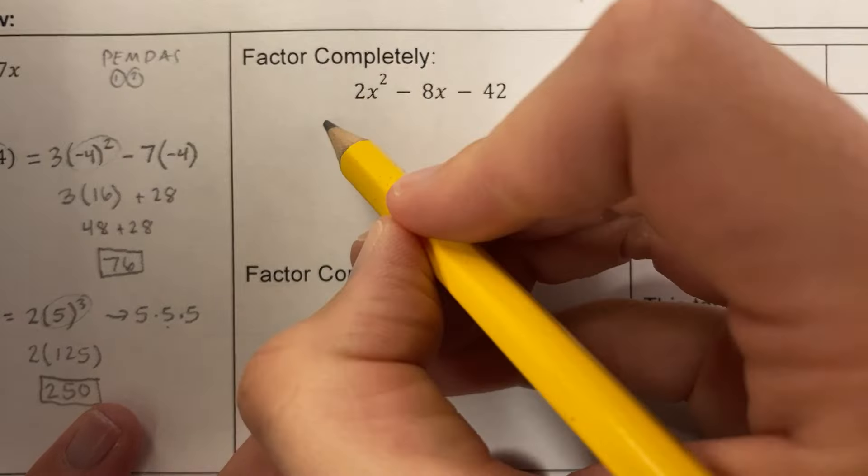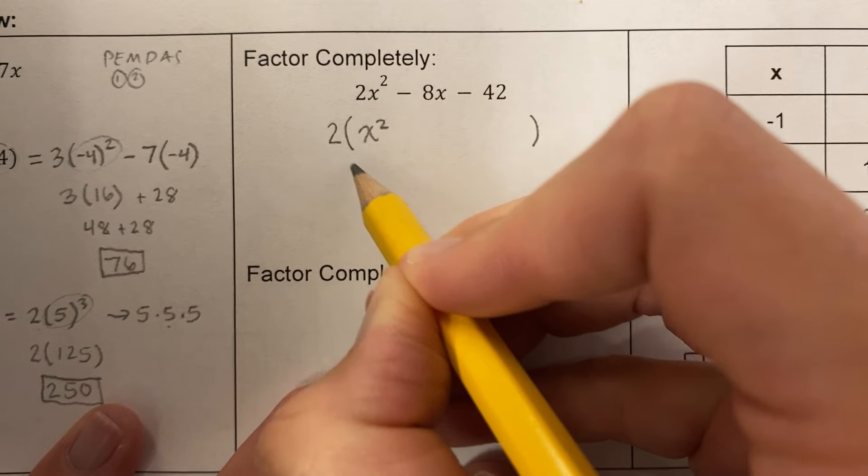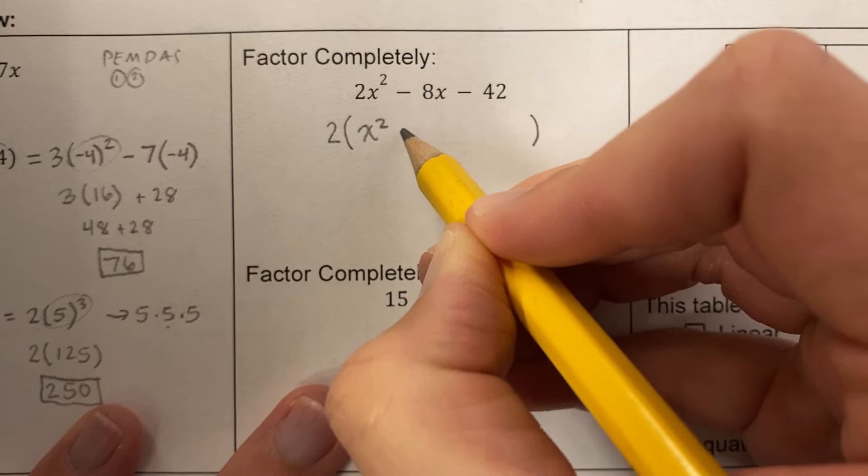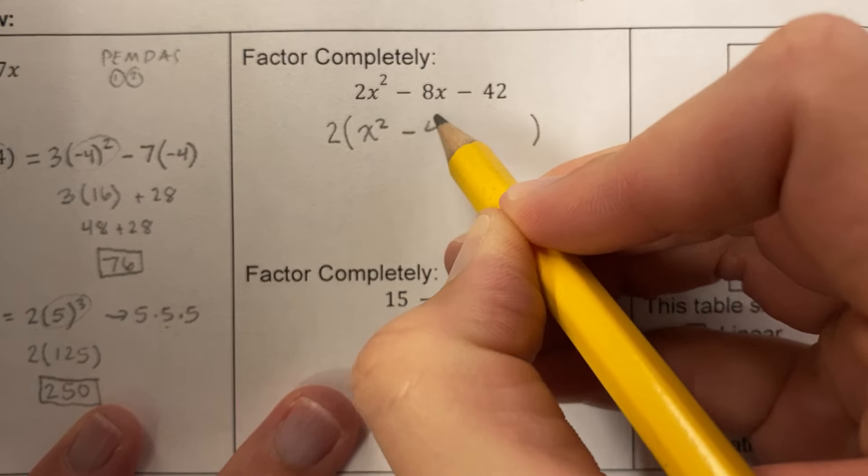2 times what is 2x squared? 2 times x squared. 2 times what is negative 8x? Negative 4x. 2 times what is negative 42?